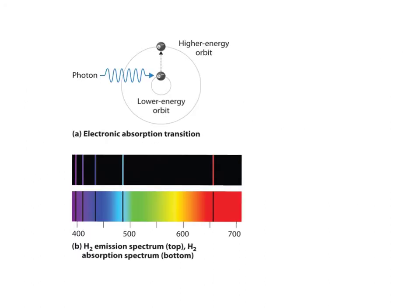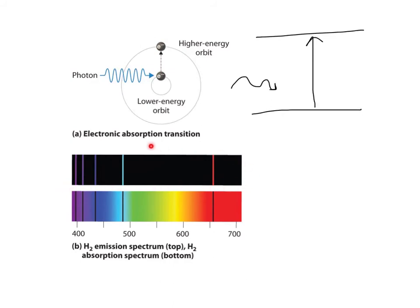Atoms can also absorb specific frequencies of light — they can take the energy from a photon. A single photon comes along and gives its energy to a single electron, putting it up to a higher energy level. So here we have a photon being absorbed rather than emitted. The top half of the bottom diagram shows the emission spectrum from hydrogen gas — very particular frequencies corresponding to the different gaps between energy levels in the atom.